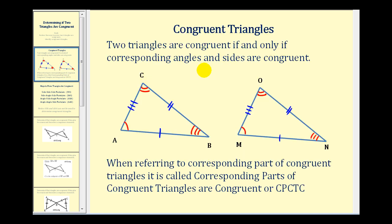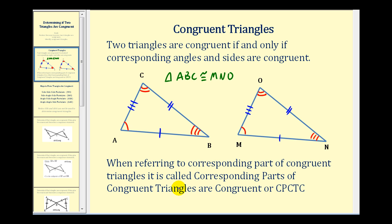Two triangles are congruent if and only if corresponding angles and sides are congruent, as we see marked here. It's important that when we identify congruent triangles, the vertices are listed in corresponding order. So if we identify this triangle as triangle ABC, it would be congruent to triangle MNO, because vertex A corresponds to vertex M, vertex B corresponds to vertex N, and vertex C corresponds to vertex O. When referring to corresponding parts of congruent triangles, it is called corresponding parts of congruent triangles are congruent, or CPCTC.